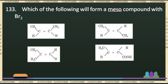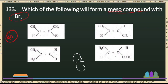But the meso-component of the product has a half part of the dextrorotatory and a half part of the levorotatory, which is self-compensating the optical activity of the molecule.